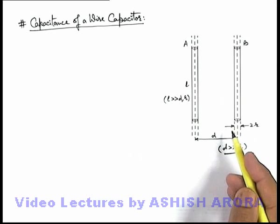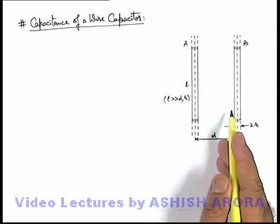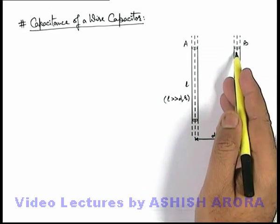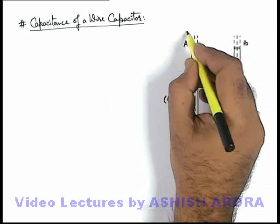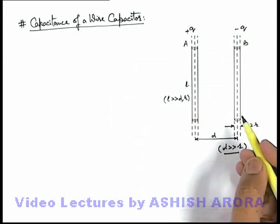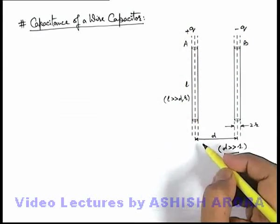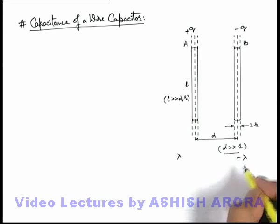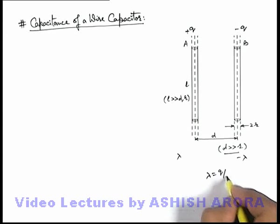Now in this situation we wish to find out the capacitance of this system. For the same, if we transfer a charge q from wire B to A, A will receive a charge plus q and B will receive a charge minus q. If we consider the wires to be very long, the linear charge density will be lambda and minus lambda where lambda can be written as q by l.